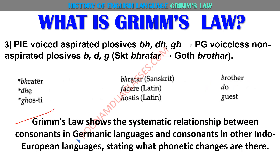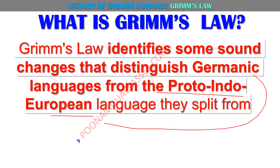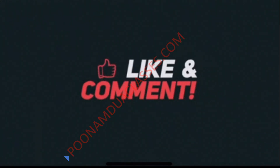Last mein aap aise summarize kar sakte hain: Grimm's Law — it shows the relationship between consonants in Germanic languages and consonants in other Indo-European languages, and states ki kis tarike ke phonetic changes aa rahe hain. So what is Grimm's Law? Basically it is a law that identifies the changes — since Proto-Indo-European language se Germanic language aate aate kuch sound systems change hue the, as discussed in this video. Please do not forget to share and subscribe to the channel and provide your valuable feedback in comments.